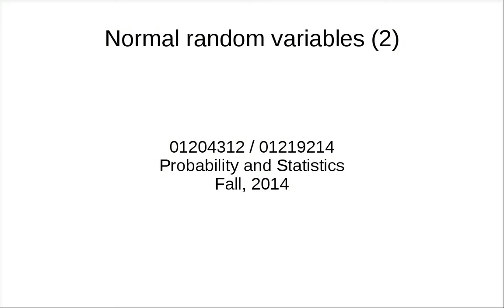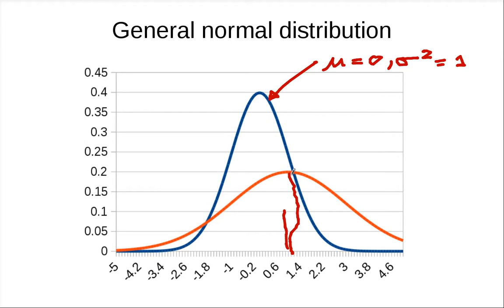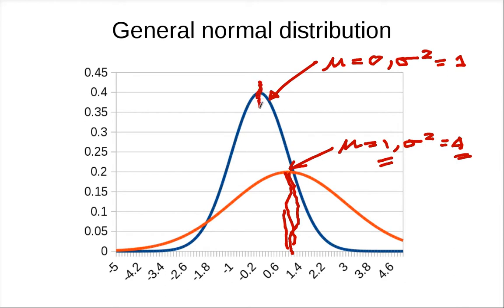Let's continue our discussion on normal random variables. We have this figure showing the standard normal distribution whose mean is zero and variance sigma squared is one. The other distribution has mean one and a larger variance, so it is flattened out. Because the mean is one, the center of the density function shifts to the right.